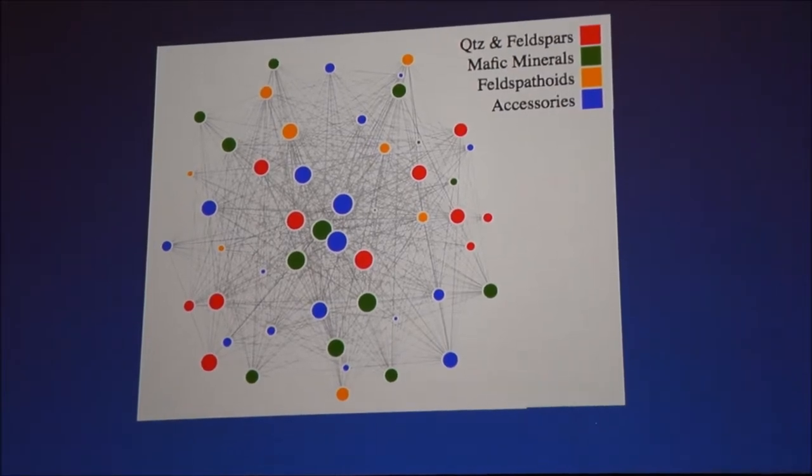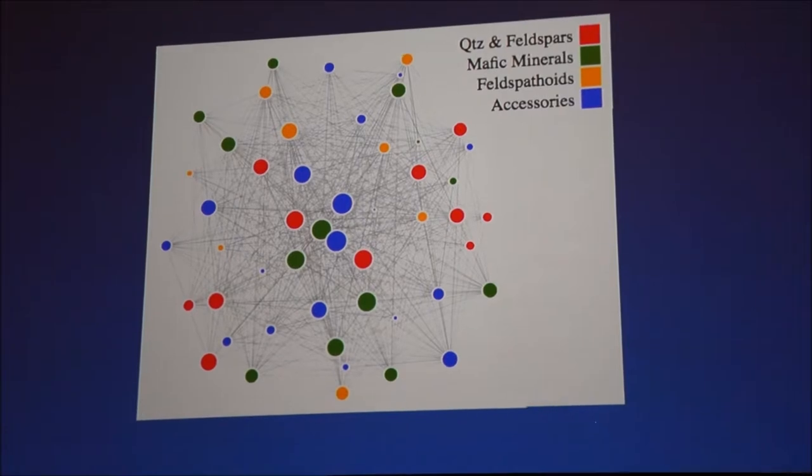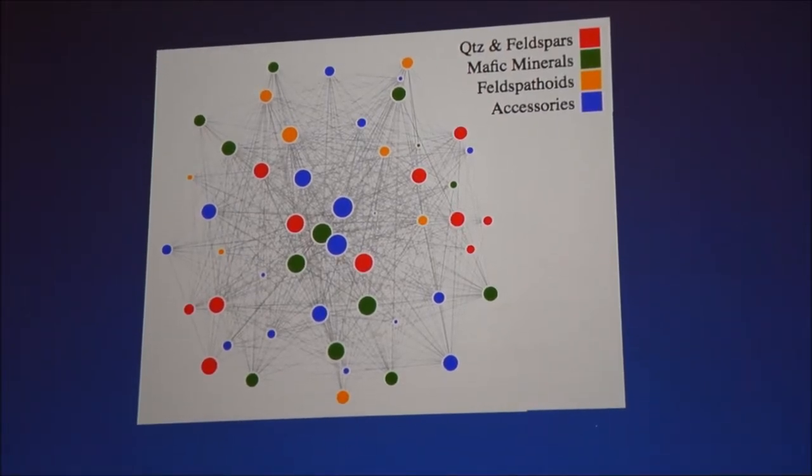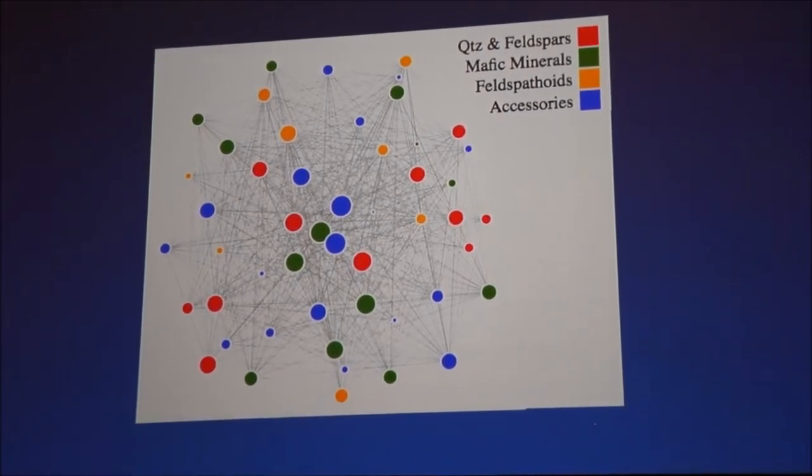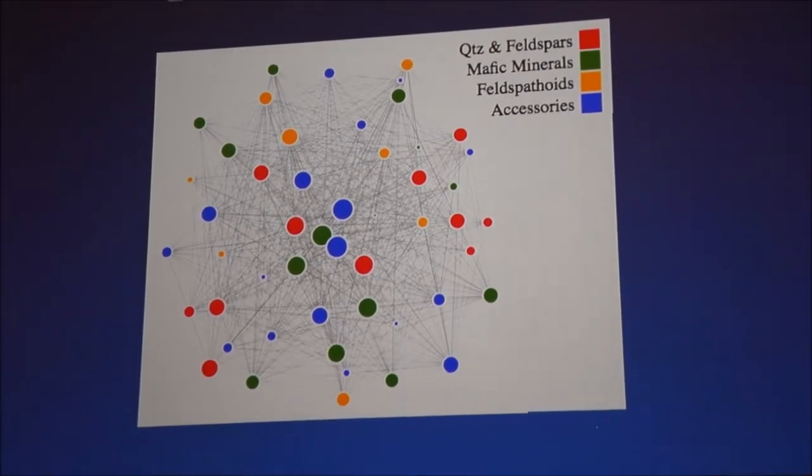You could color these nodes on many different parameters. You could also change the size, you could change the shape of the nodes, you could change the transparency of the nodes. You can represent a lot of different types of information in this diagram.